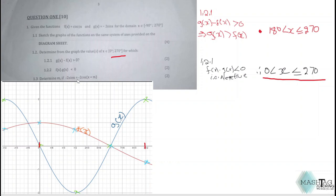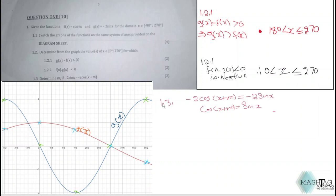Last question, question 1.3, says determine m if -2sin(x) = -2cos(x) + m. That should be easy. Moving forward with 1.3, you just put that together. Obviously, -2 and -2 they can take each other out. You're left with cos(x) + m = sin(x). We are looking for the value of m, therefore cos(x) + m equals to the sine of whatever is on the right-hand side, which is sin(x).